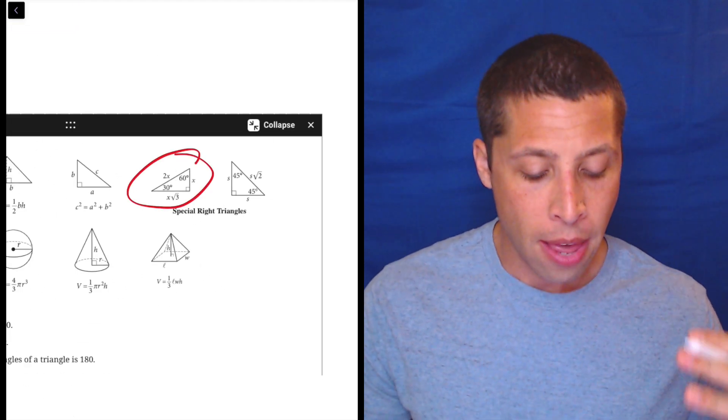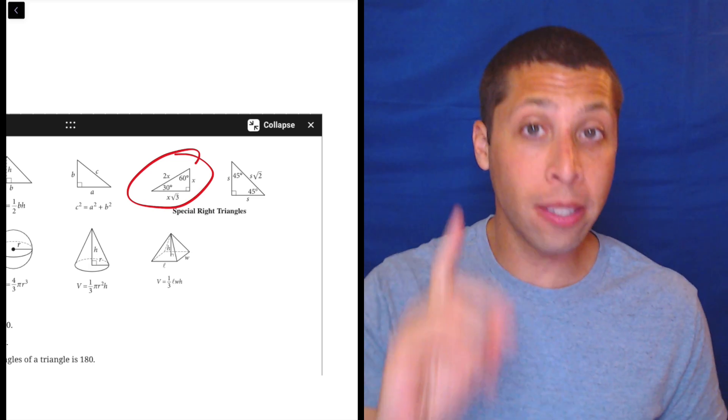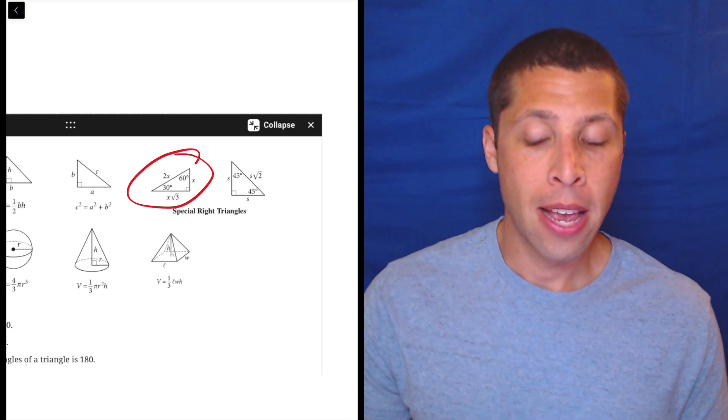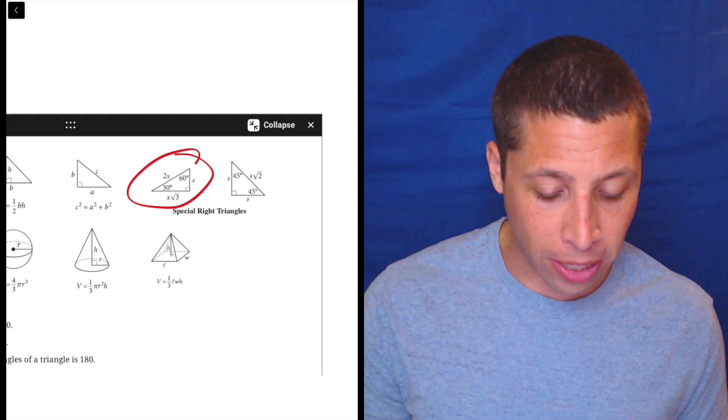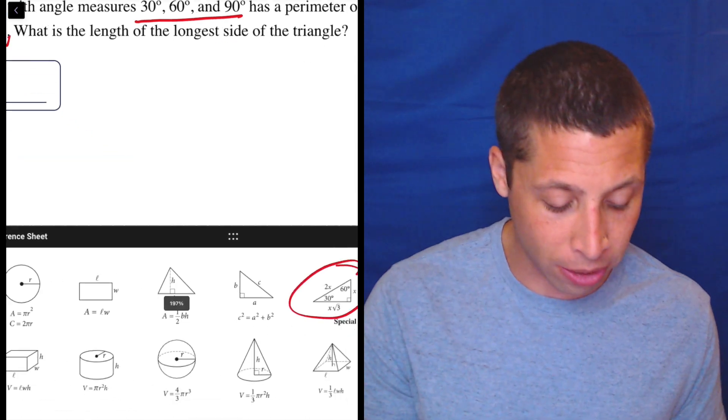So what does this mean? This means that without doing any trigonometry, if we know one side of a 30-60-90 triangle, we know all the sides. Now, right now they're not quite giving us all the sides. We're going to be able to figure it out because they're giving us the sum of the sides. So we can create a little algebra here.